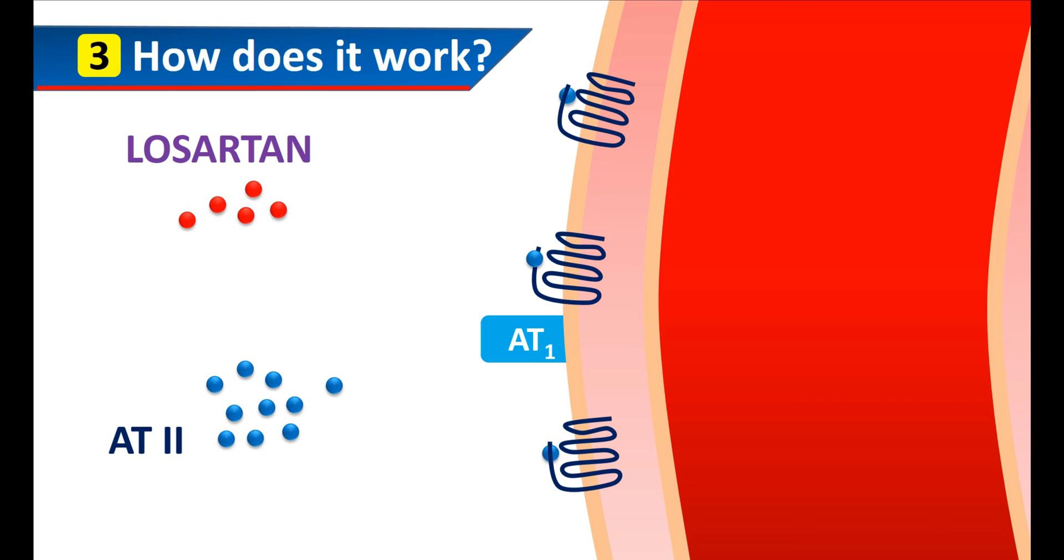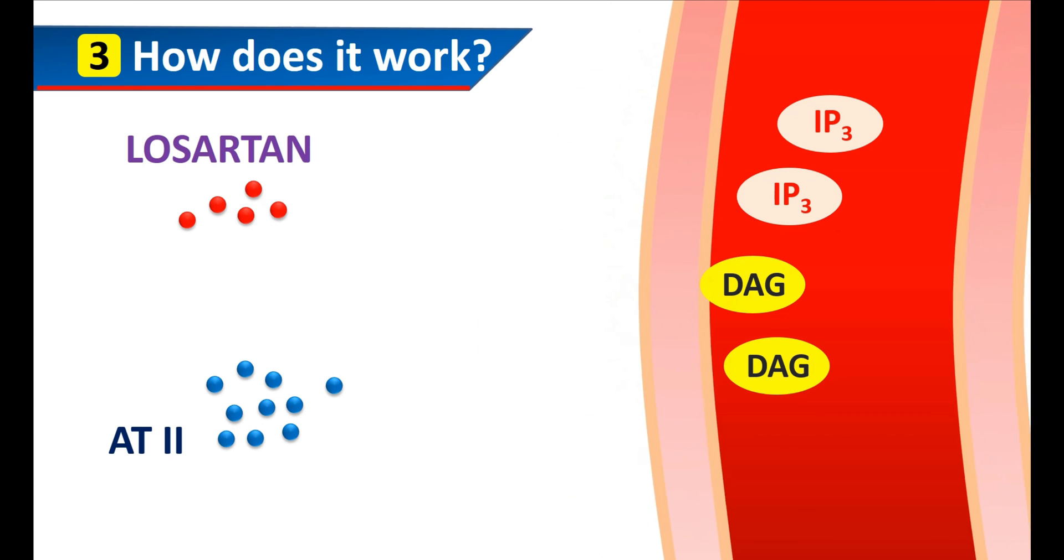Angiotensin 2 binds to these receptors, resulting in their activation. Consequently, it releases a few mediators like IP3, inositol triphosphate, and DAG, diacylglycerol. These two mediators are responsible for increased intracellular calcium levels, which produce vasoconstriction.